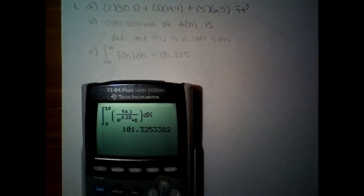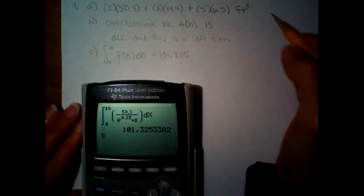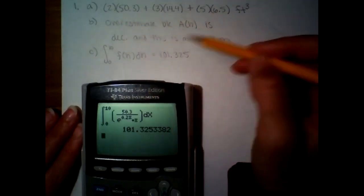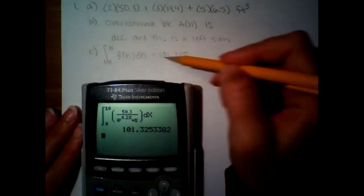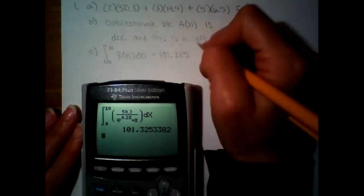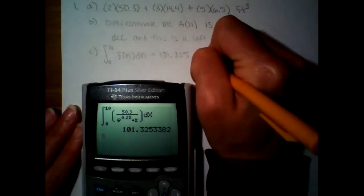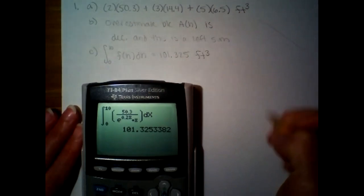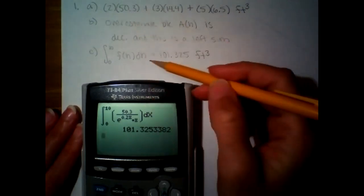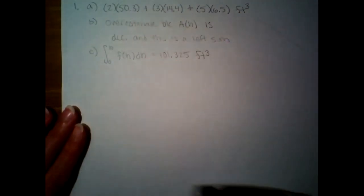And again, it said indicate units of measure. This is the same thing we did in Part A. They wanted us to find the volume. It's just, while this was an estimate, here they gave us an actual function to type in, and this would be an actual value. But they're both representations of volume, so it would be cubic feet. It's just in Part A, it was an estimation. In Part C, we found the actual volume.